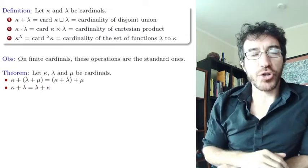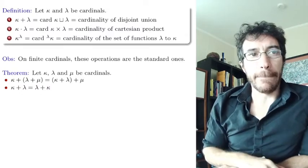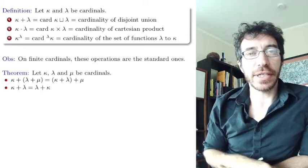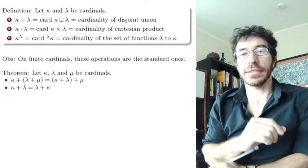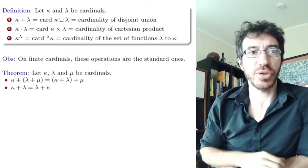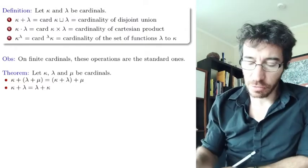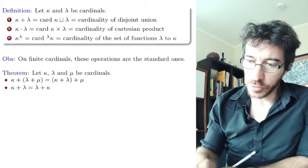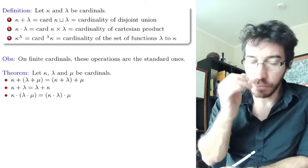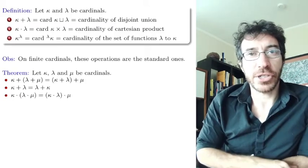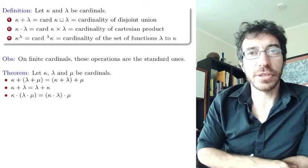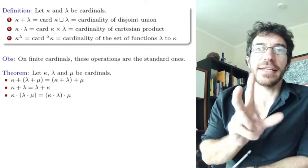Addition is also commutative — essentially you just flip the 0 and the 1 in the disjoint union. That requires a one-line proof. Multiplication also satisfies the associativity law.